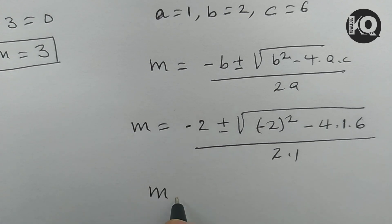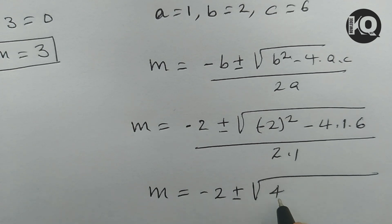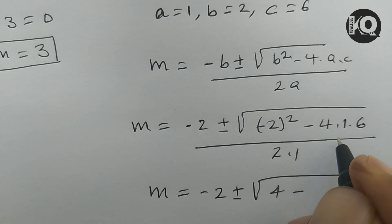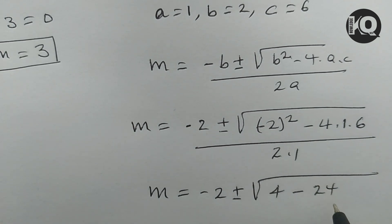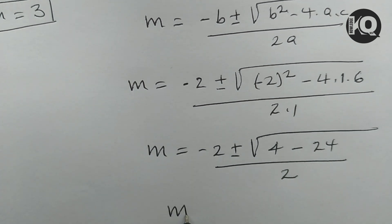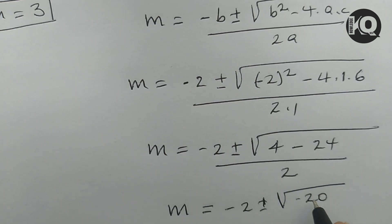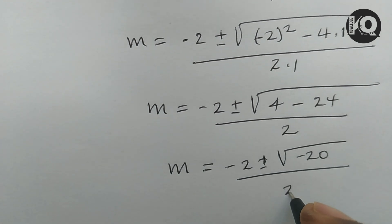Substituting: m equals minus 2 plus or minus the square root of 4 minus 24, divided by 2. This gives m equals minus 2 plus or minus the square root of minus 20, divided by 2.